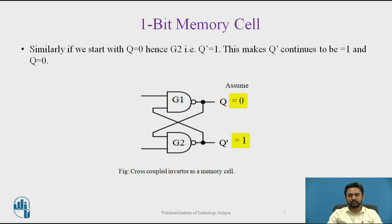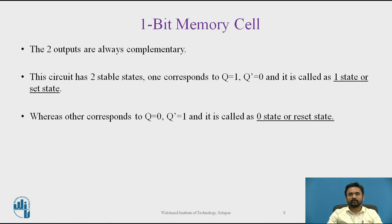Similarly, if we start with Q equals 0, G2's output Q-complement equals 1, and this makes Q-complement continuous to be 1 and Q equals 0. Therefore, such a flip-flop circuit is said to be reset. This one-bit memory cell has two outputs that are always complementary. This circuit has two stable states: one corresponds to Q equals 1 and Q-complement equals 0, called the set state, and the other corresponds to Q equals 0 and Q-complement equals 1, called the reset state. The circuit can store one bit of digital information, so it is called a one-bit memory cell, and it is also called a latch.